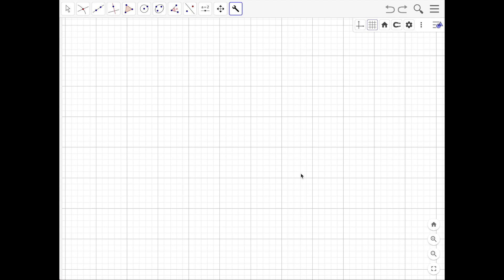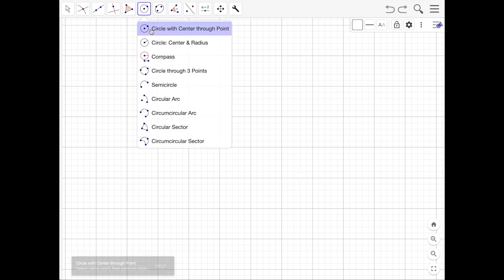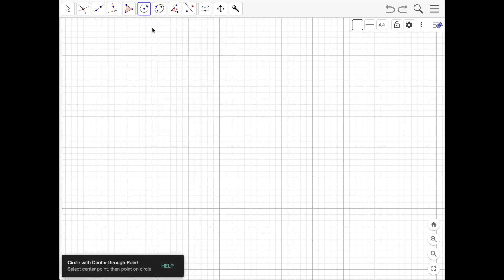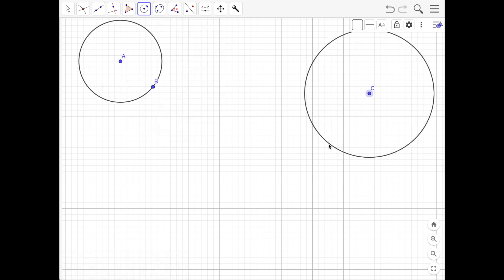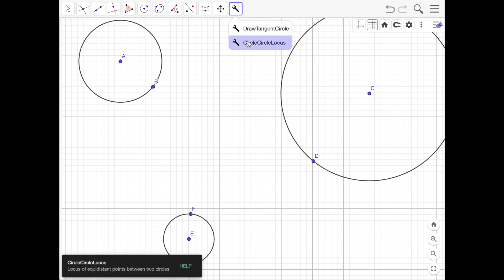So first, we need to draw three circles. So I'll go up to the toolbar, click the circle tool, and draw three circles. All right. That should be good. So I've also created this custom tool that allows us to draw the conic sections between two circles.